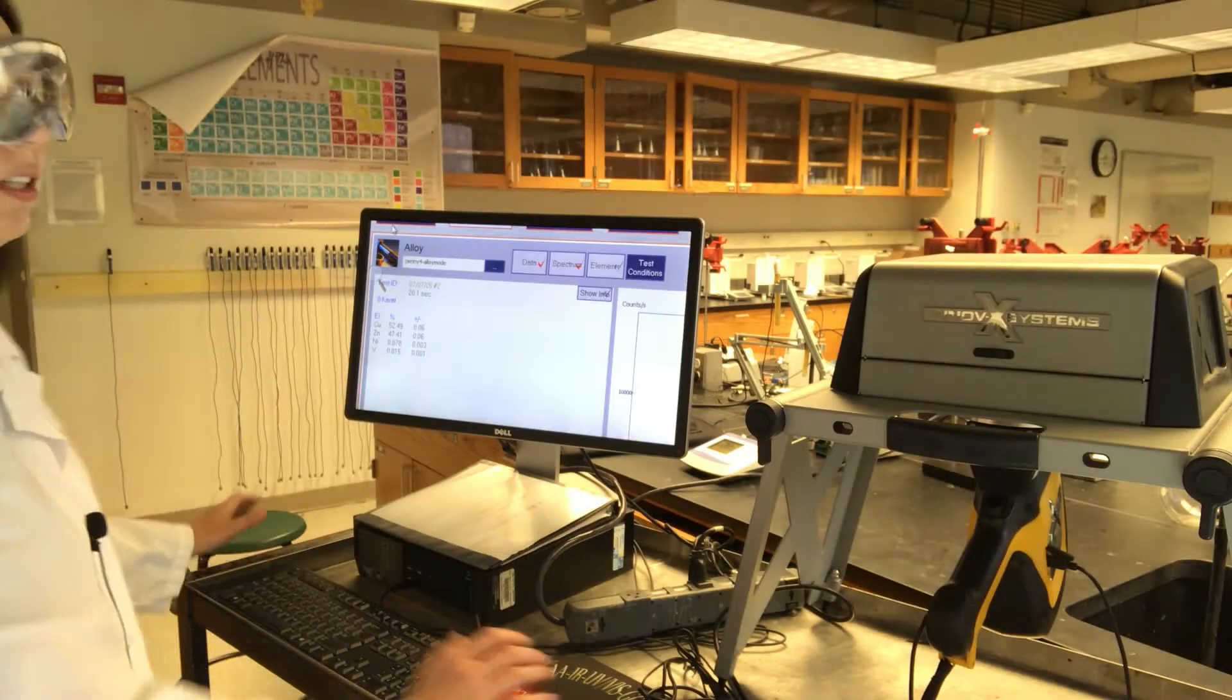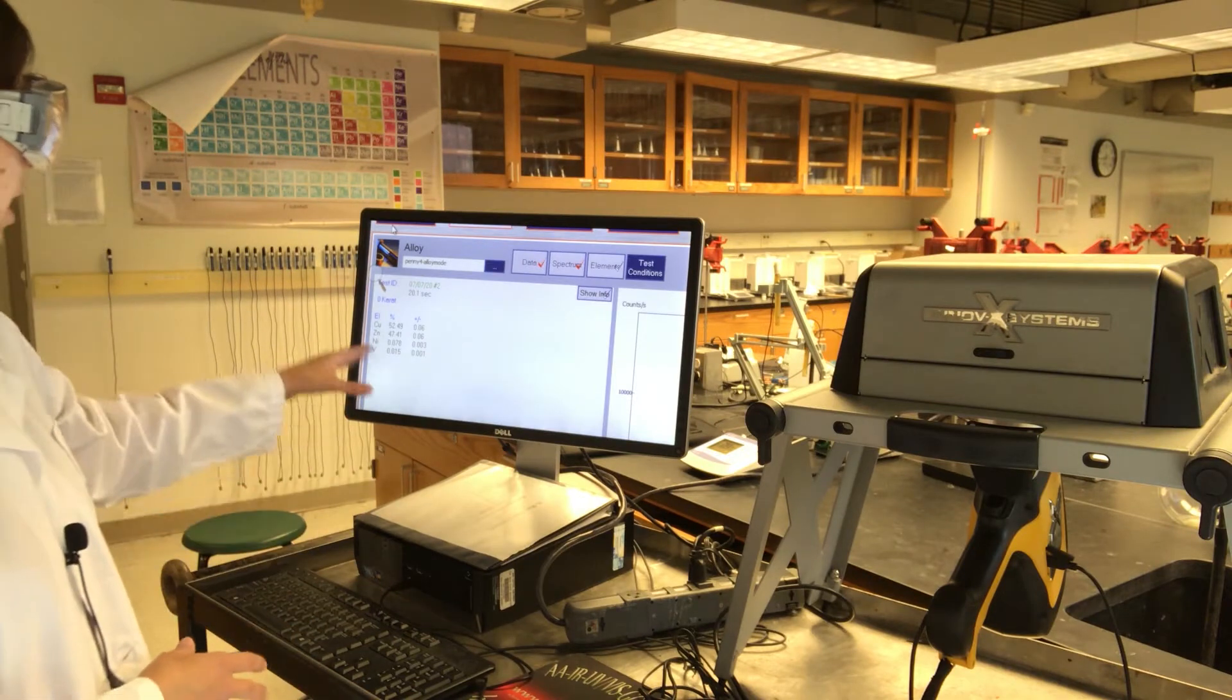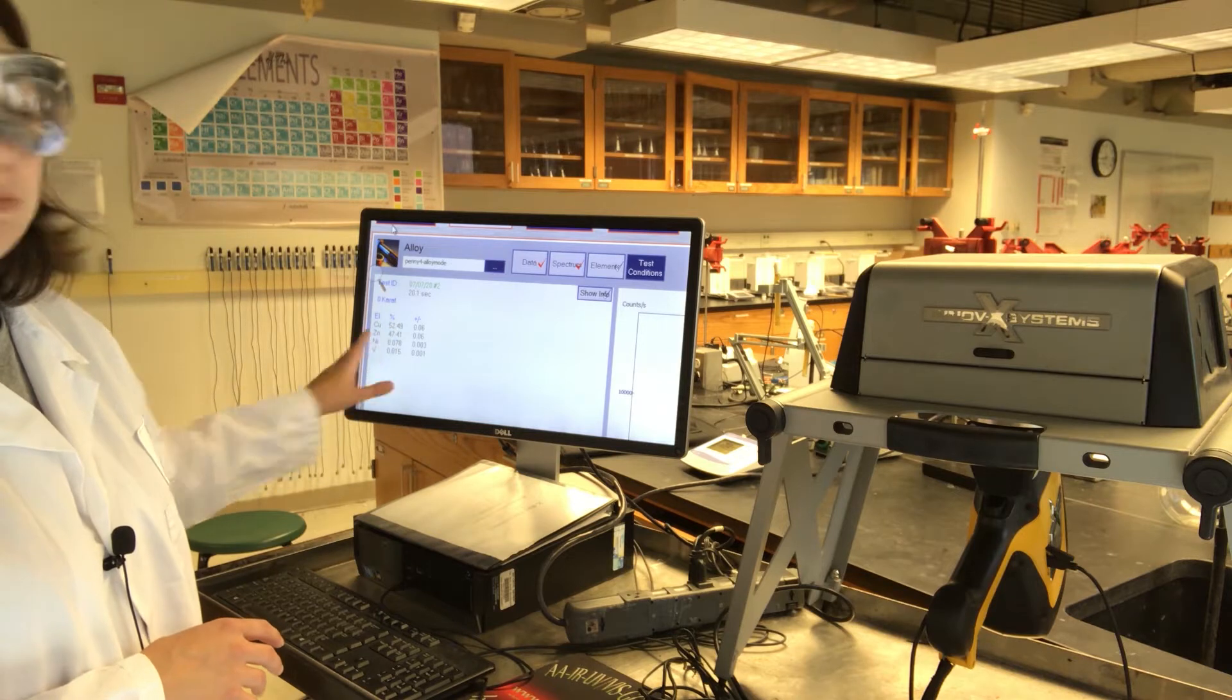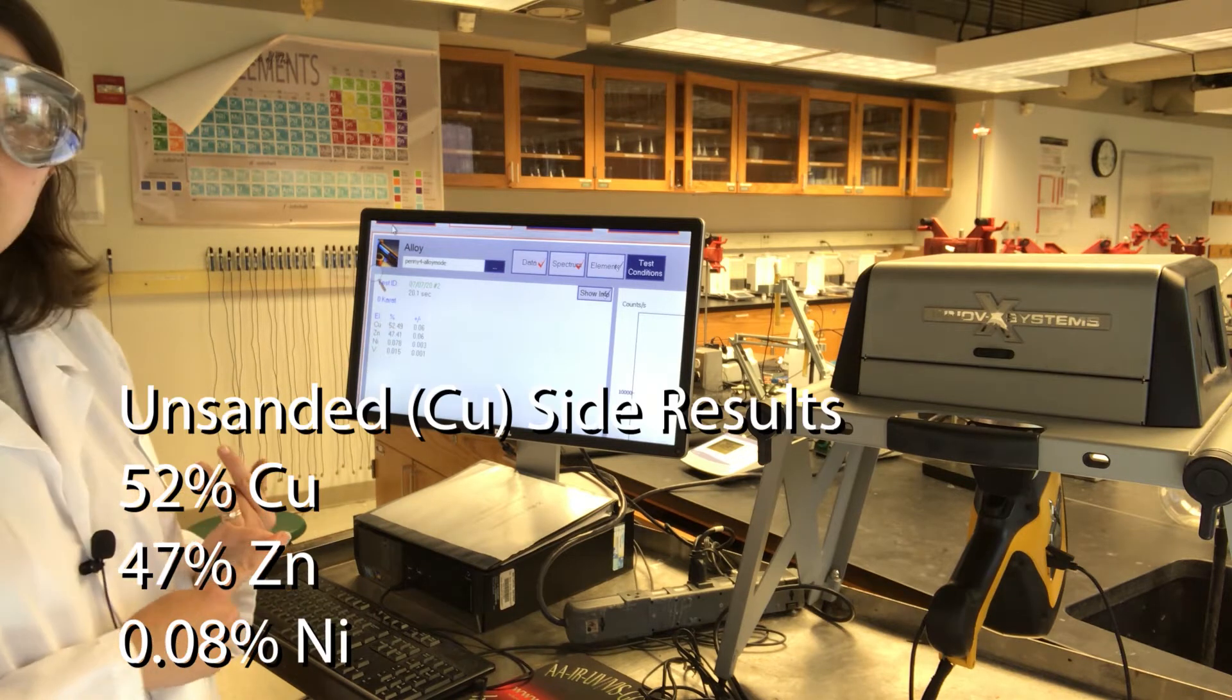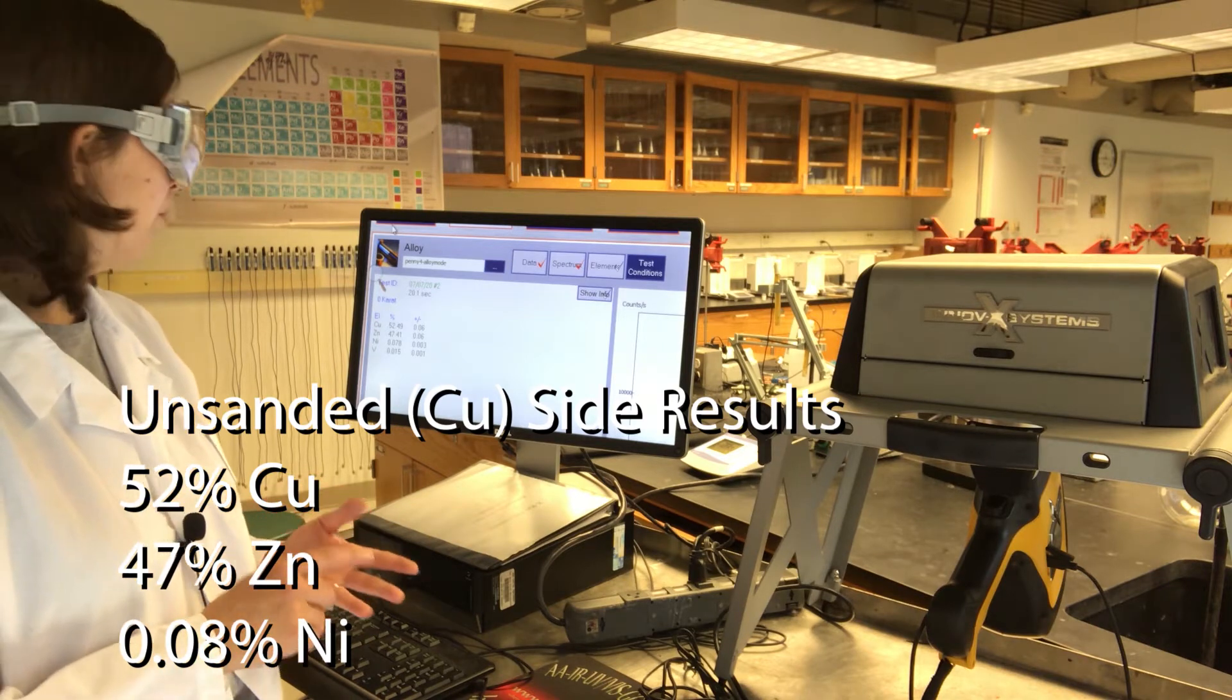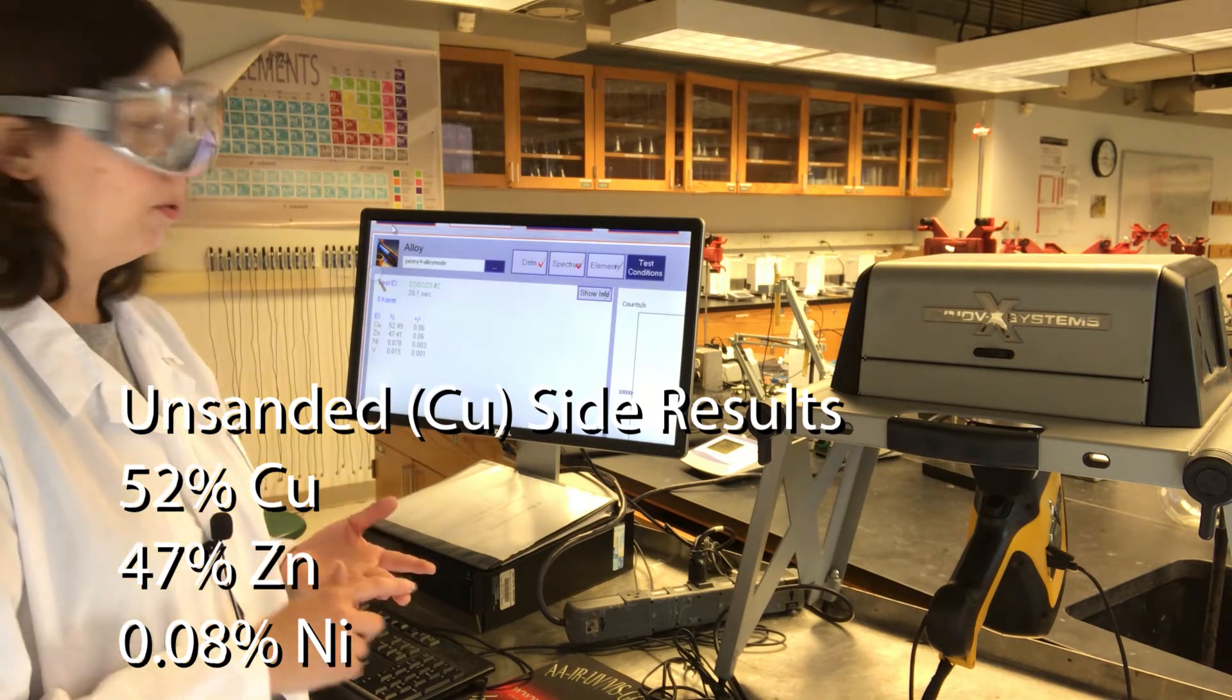The test has completed. The data are displayed here in terms of percent of each metal. We have 52% copper, 47% zinc, and 0.08% nickel.